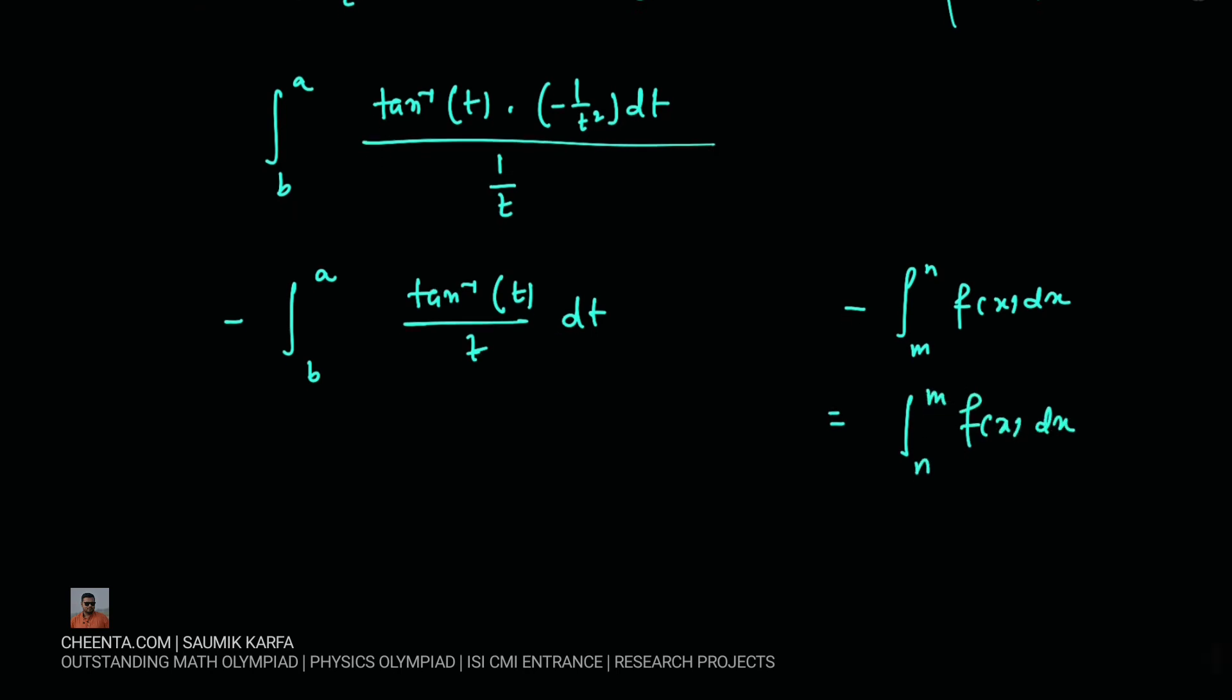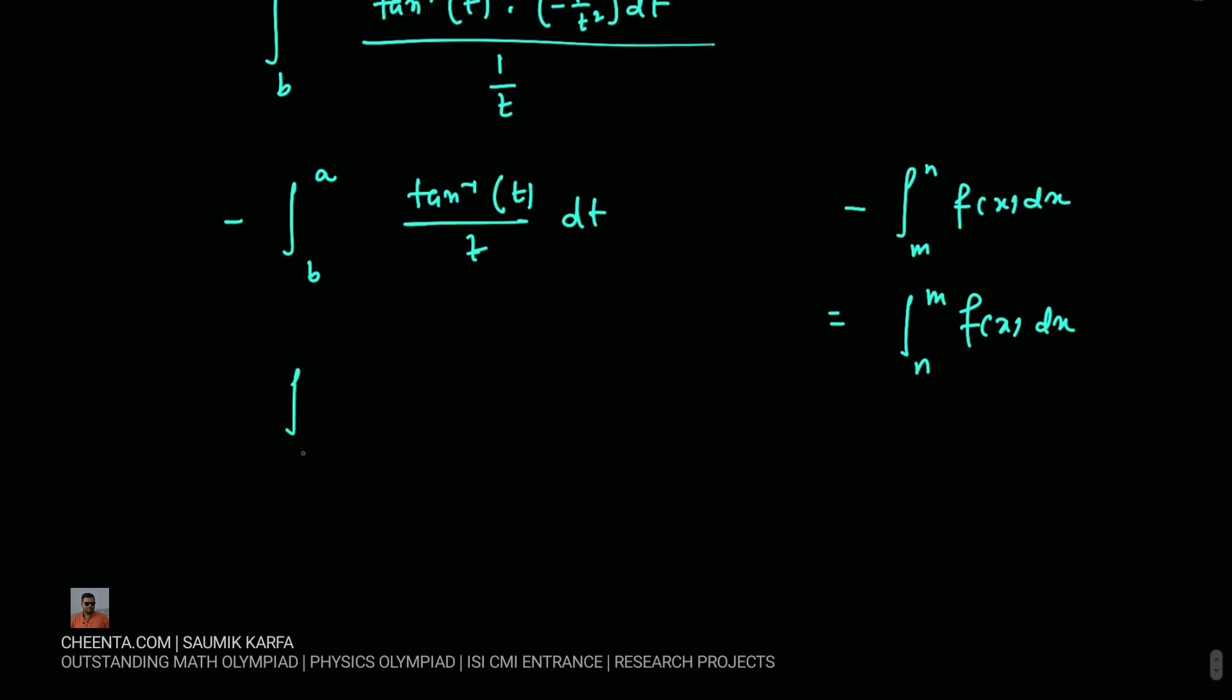Now there is a property that minus m to n f(x) dx is same as n to m f(x) dx. So using this property we can say this is from a to b again, this negative sign will go away and we will get tan inverse t over t dt.